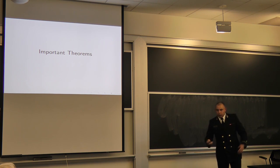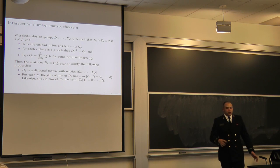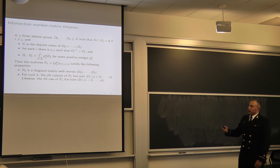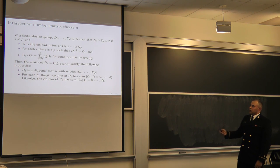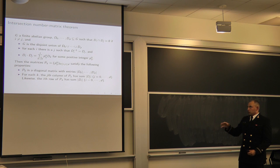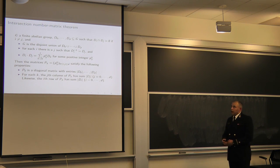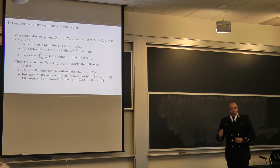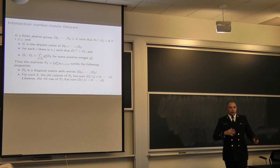Now we move to the important part of the presentation. A lot of the assumptions for the next few proofs look essentially the same: G is your group, you take a subset D, decompose it, and carry the familiar conditions. We take a matrix P sub k, which is an array of all the intersection numbers for the associated Schur ring. We know P sub 0 is a diagonal matrix where each entry is the size of D sub i, and for each of the other matrices, the sum of each column is the order of the subset D that corresponds to that column. This gives us a structure to verify that intersection numbers add up correctly.